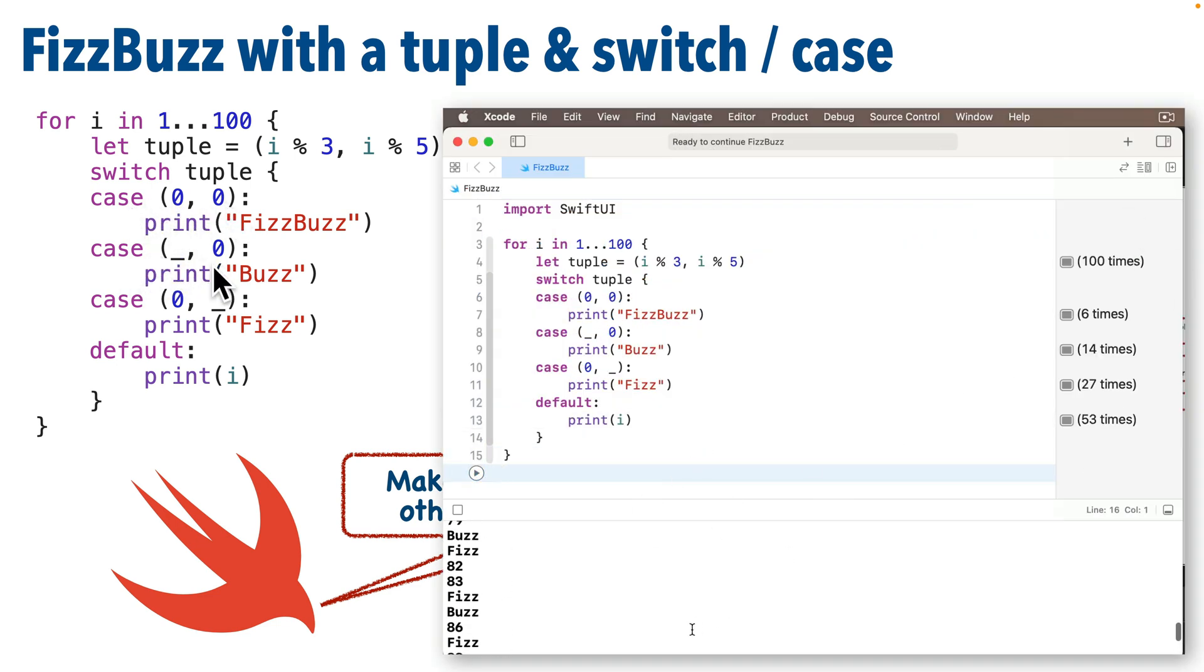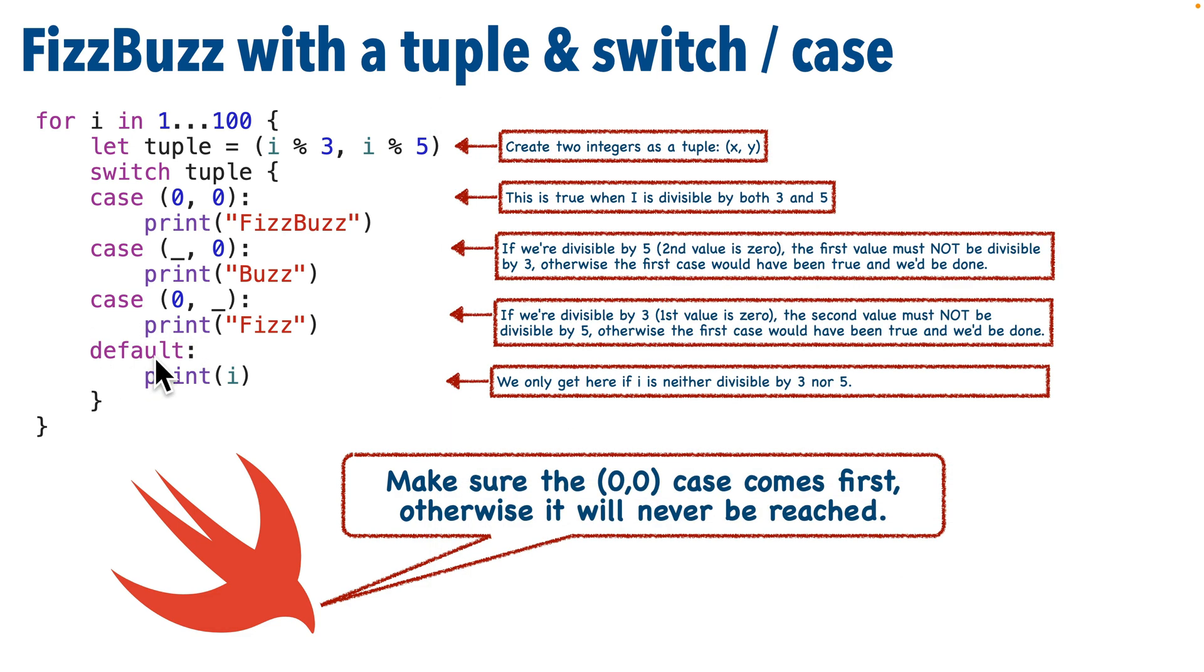So if this happens, I should print Buzz. The flipped case is down here where the first value in the tuple is zero, so I should print Fizz. And if none of these cases are true, the default value has me print i.